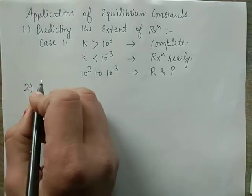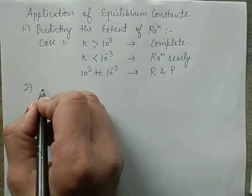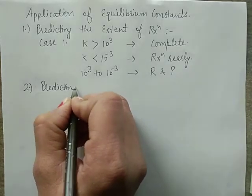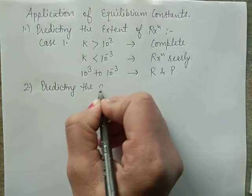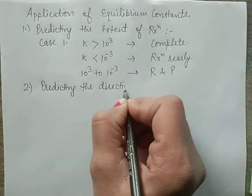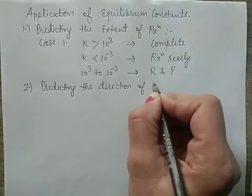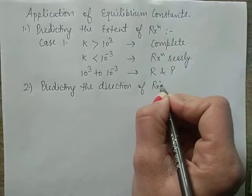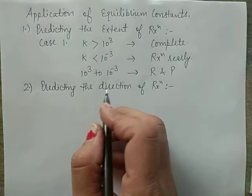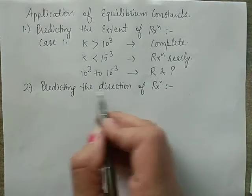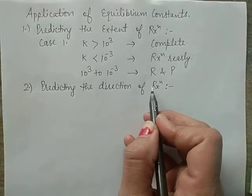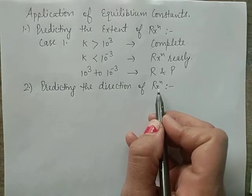Now we discuss the second application — predicting the direction of reaction. The equilibrium constant is very useful for predicting the direction in which the reaction will progress at any stage.